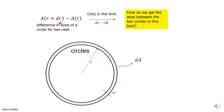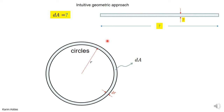We want to find this in the limit when dr is very small — when dr goes to zero. The intuitive geometric approach is to cut the ring area and unroll it into a rectangle. When you make it into a rectangle, this is what you get.